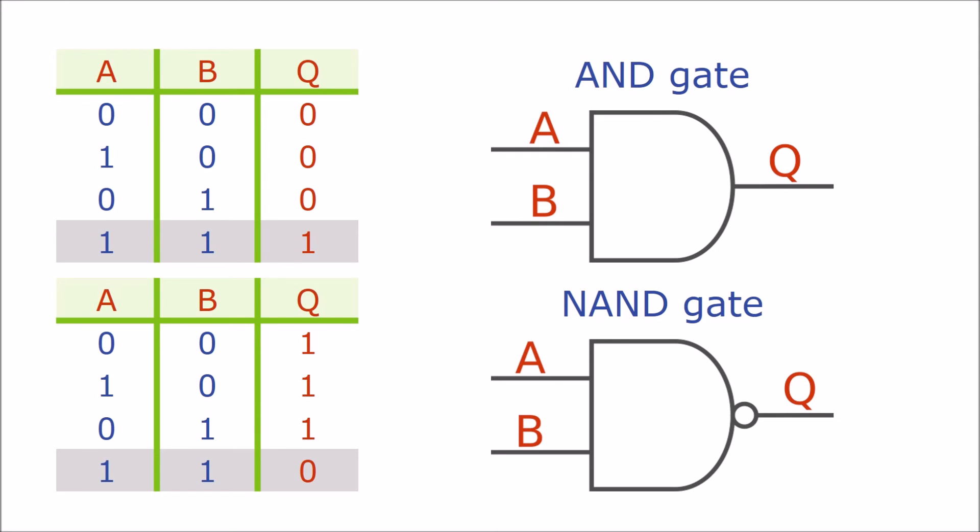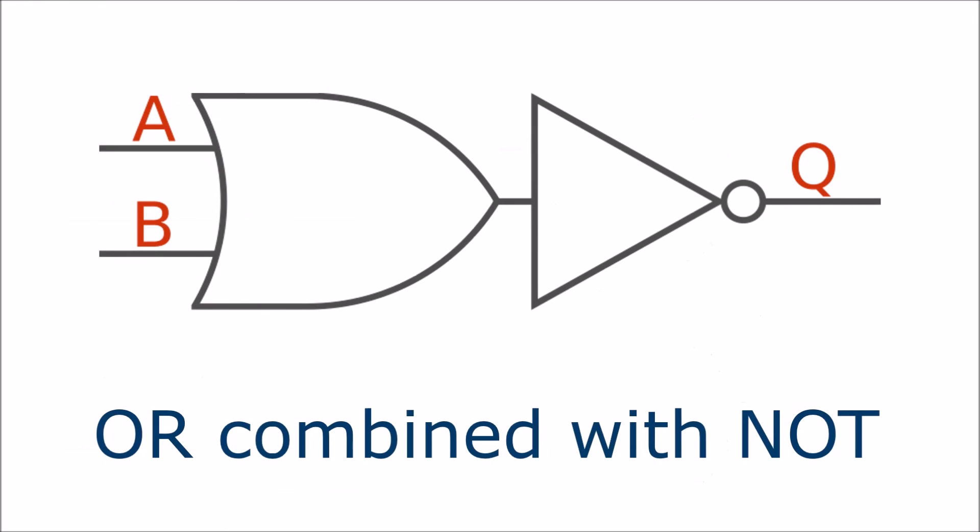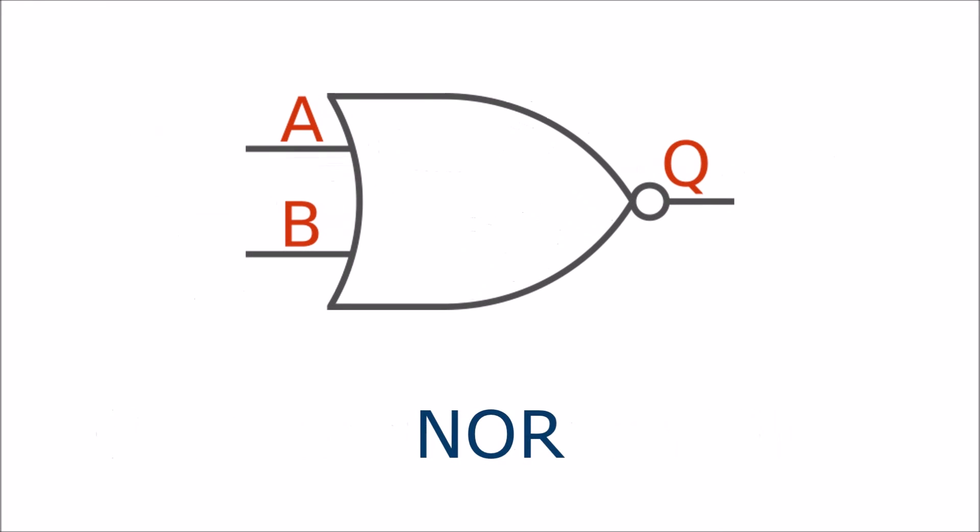As you might guess we can also combine the NOT gate with an OR gate to produce a different type of inverting gate called a NOR gate. Again it has a symbol which is similar to the OR gate with a circle on its output.